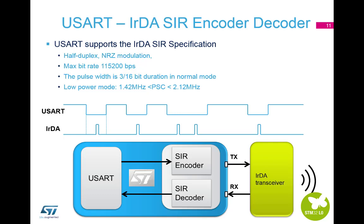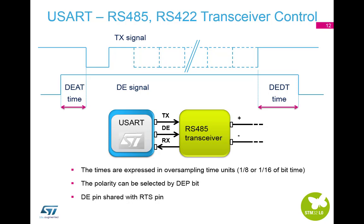IrDA mode is a half-duplex communications protocol. The SIR transmit encoder modulates the non-return-to-zero transmit bit stream output from the USART. In low-power mode, the pulse width is not maintained at 3/16 of the period. Generally, this value is 1.8432 MHz. A low-power mode programmable divisor divides the system clock to achieve this value. The USART also supports RS-485 and RS-422 by use of the driver enable bit.